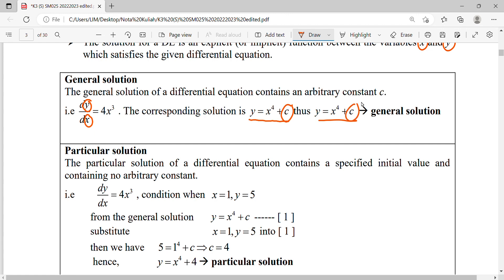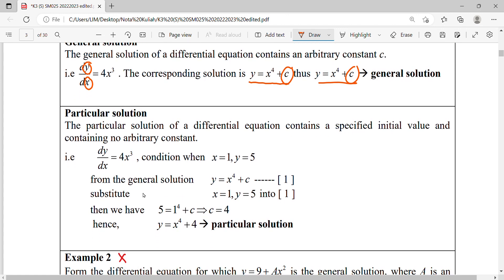But when we're talking about particular solution, we have to find out the value of c. So the difference between general and particular is whether you find out the c or not.